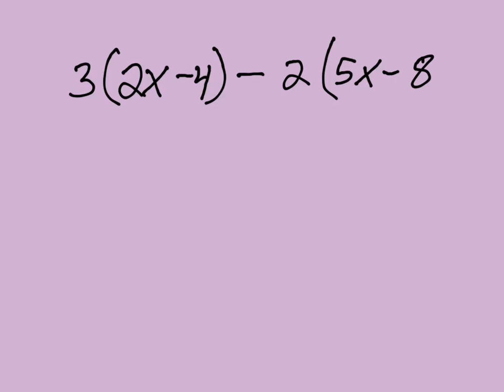How about 3 times 2x minus 4 minus 2 times 5x minus, let's say, 8. Whatever number we want. I'm just making these up. So 3 times 2x is 6x.